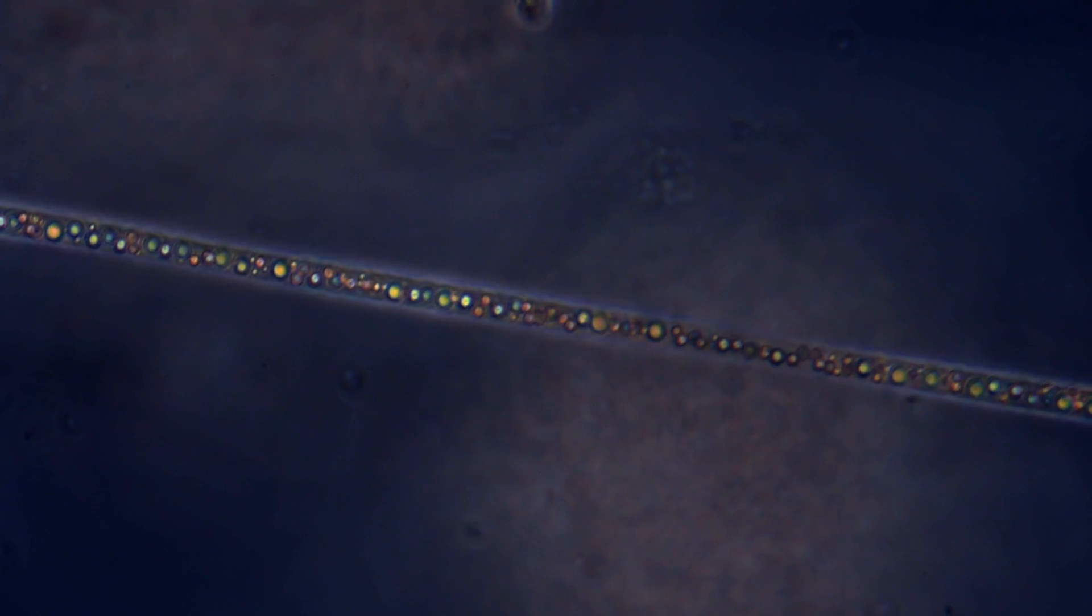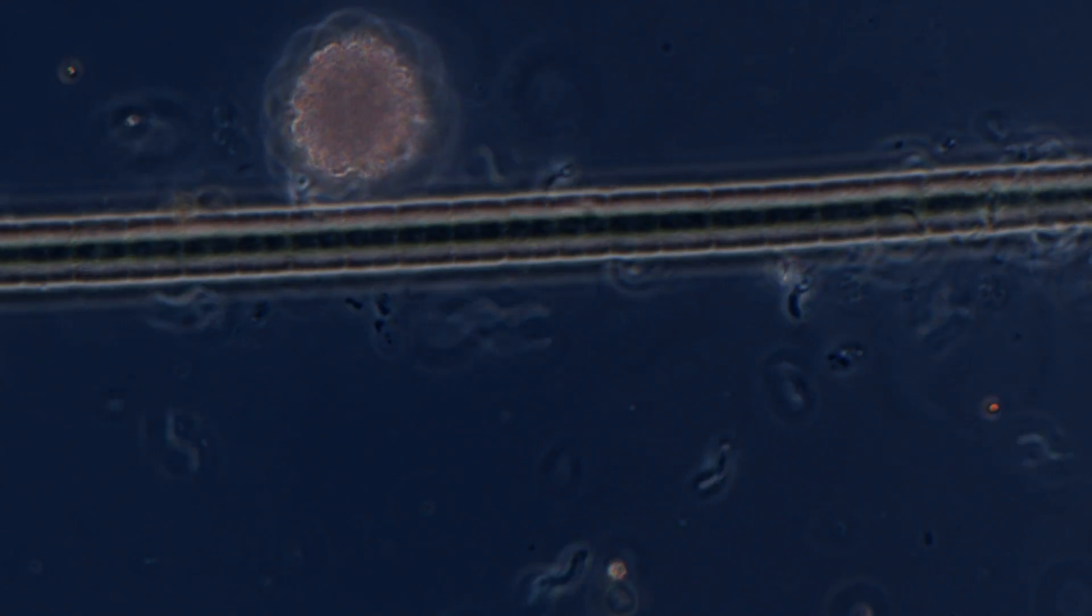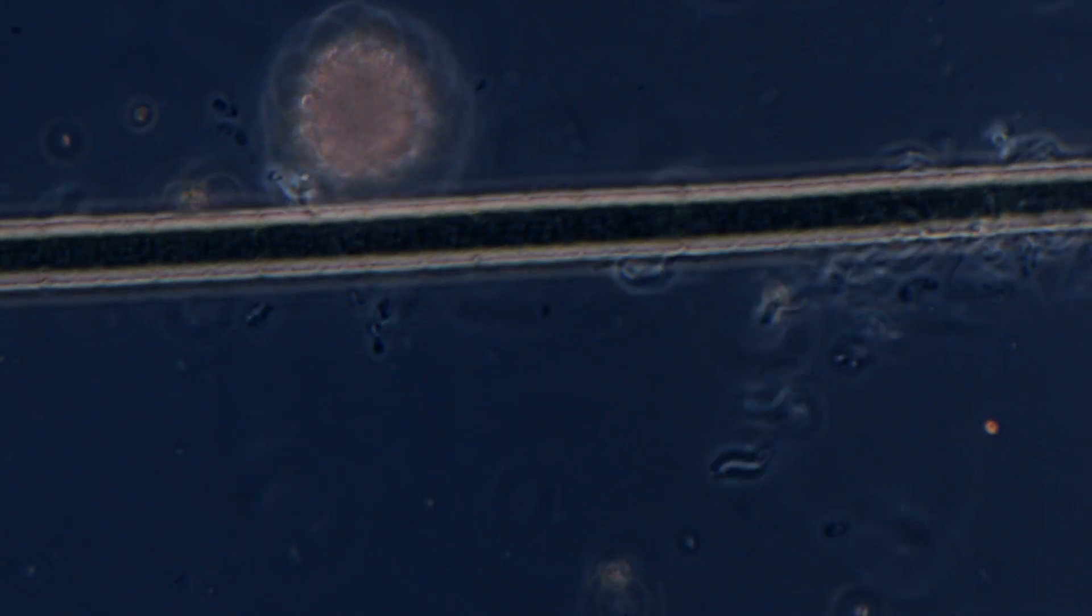The iridescent circles are reflections of light on sulfur inside the cells. Here you can see how the individual bacteria are linked like the cars of a train.